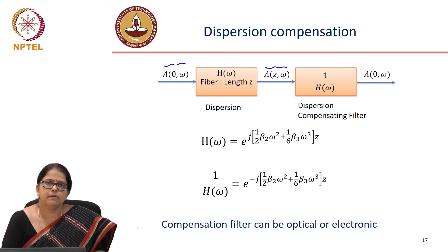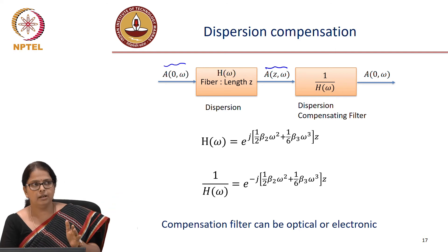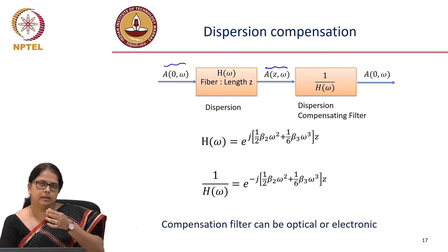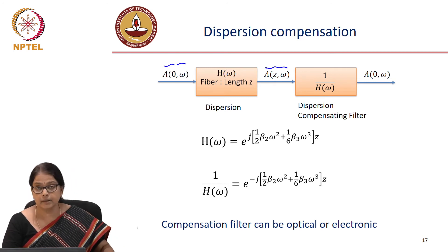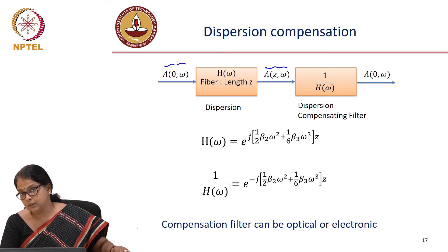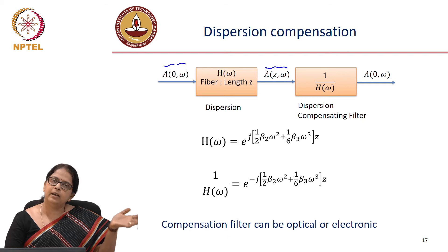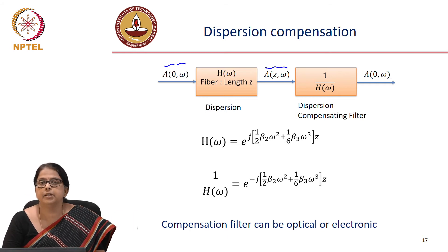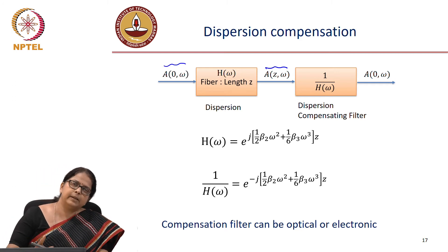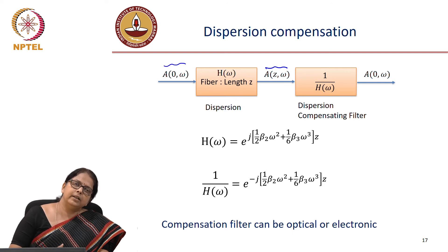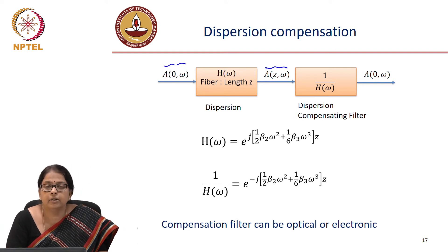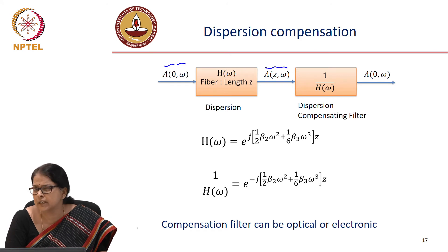All-optical compensation of dispersion was traditionally done over many years, but recently with the advent of coherent communication systems, we have moved to electronic — digital dispersion compensation. So we will talk about both. Legacy systems that are already established use dispersion compensating fibers for dispersion management. But when these fiber optic systems are being upgraded, what is currently being done is replacing optical compensation with electronic compensation using digital signal processing.